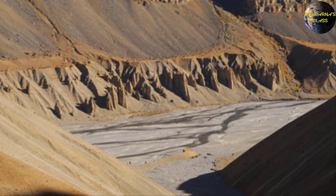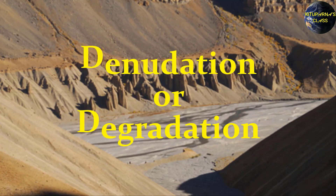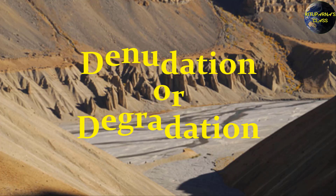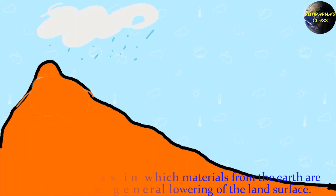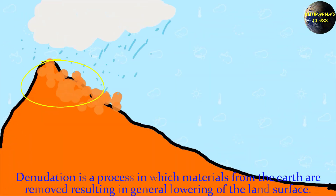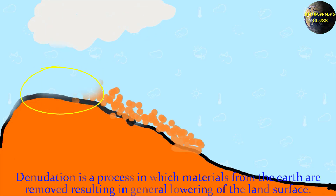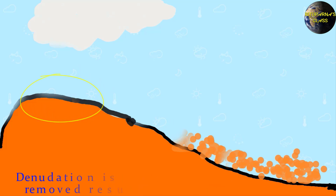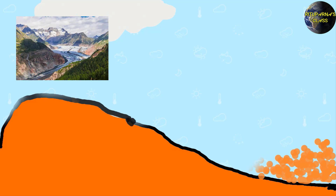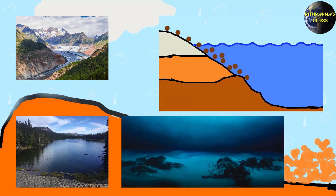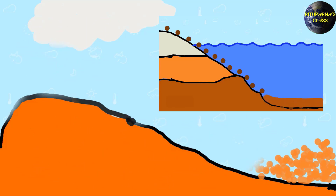First, we are going to discuss denudation. What is denudation? Denudation or degradation is the process by which rock materials from the earth's surface are removed. As a result, you can see the general lowering of the land surface. Where do those materials go? These materials are then deposited in depressions such as valleys, lakes and sea beds. Gradually the depressions fill up and the level of the surface rises.